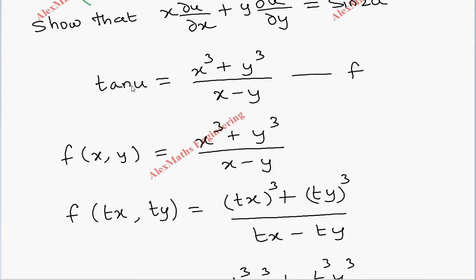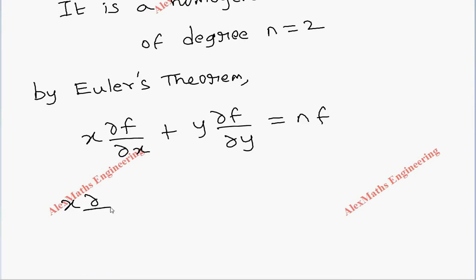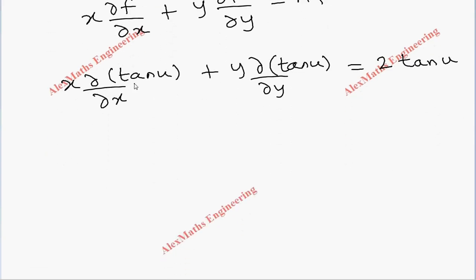In place of f we have to use tan u. So in all the places of f, let's substitute tan u. So x into ∂/∂x of tan u plus y into ∂/∂y of tan u equals 2 tan u. Now we have to differentiate tan u with respect to x, so differentiation of tan u is secant square u, and by chain rule differentiation of u will be ∂u/∂x.